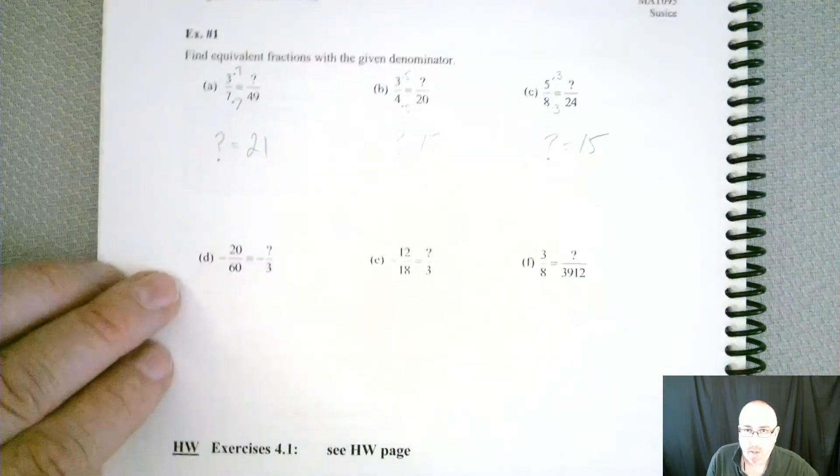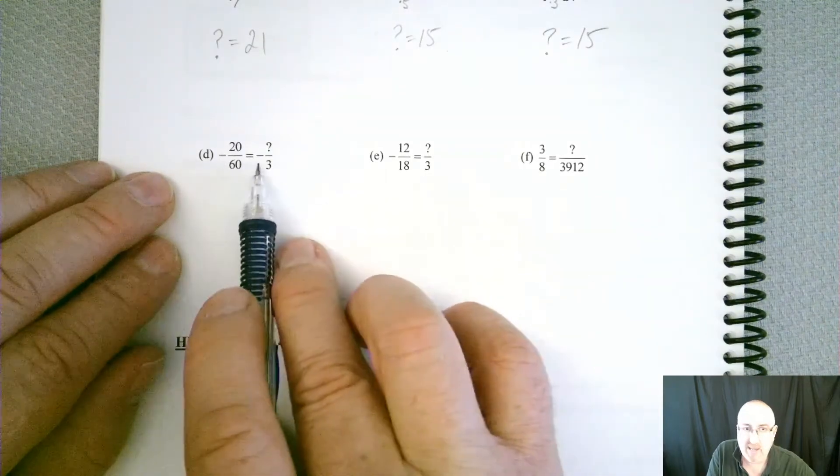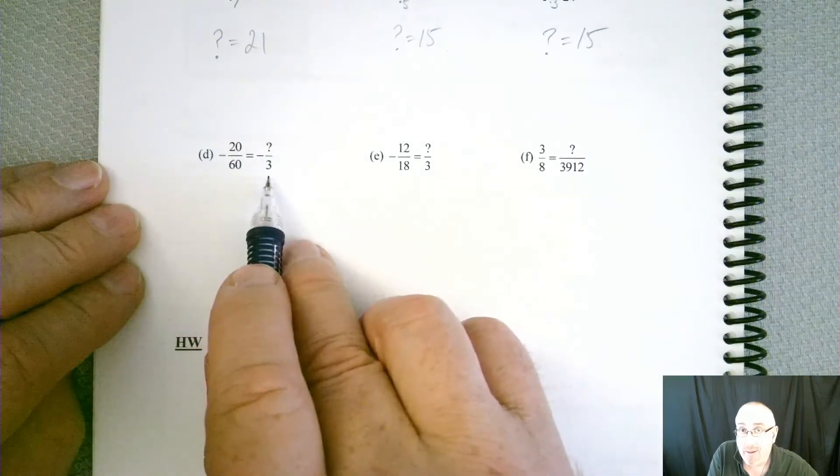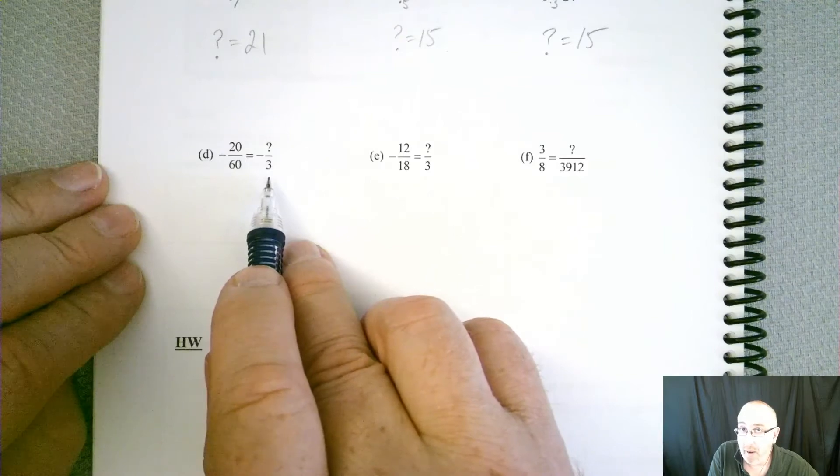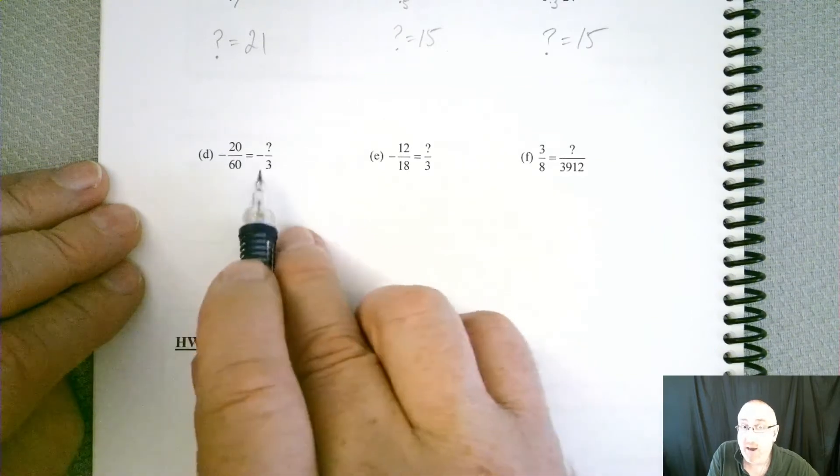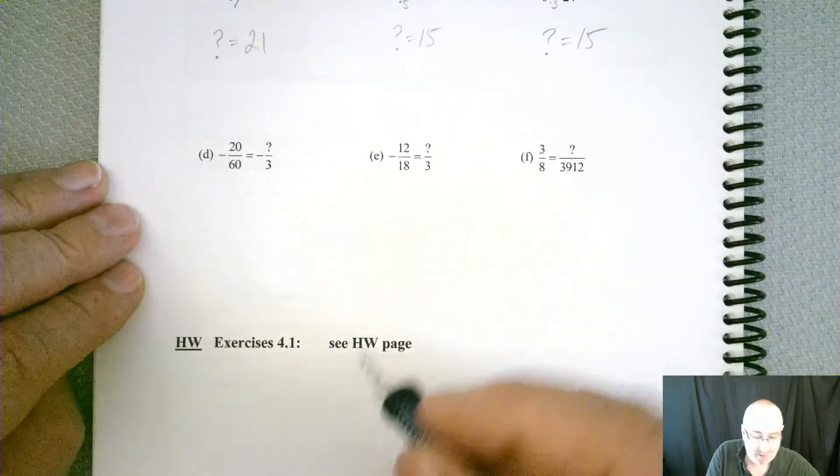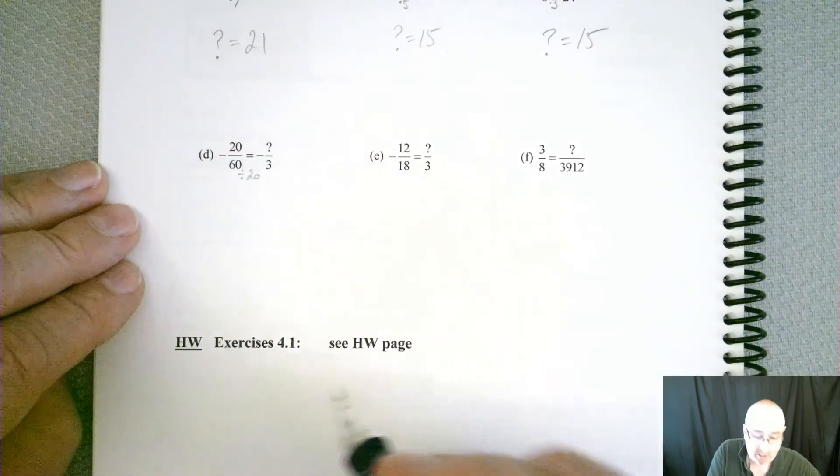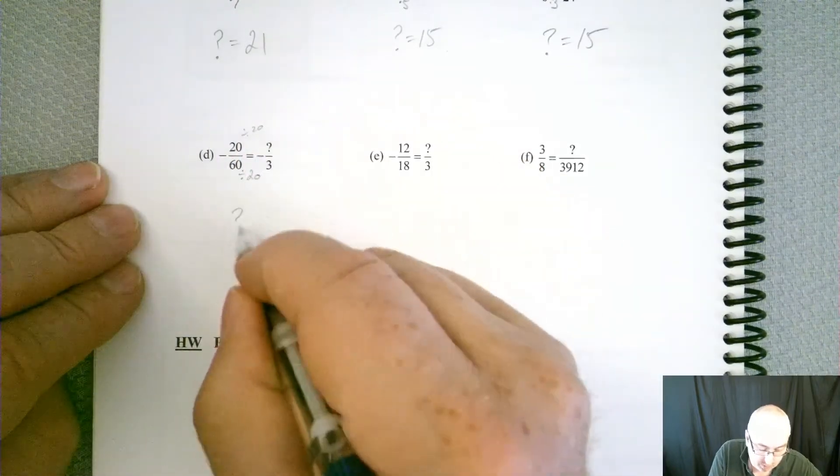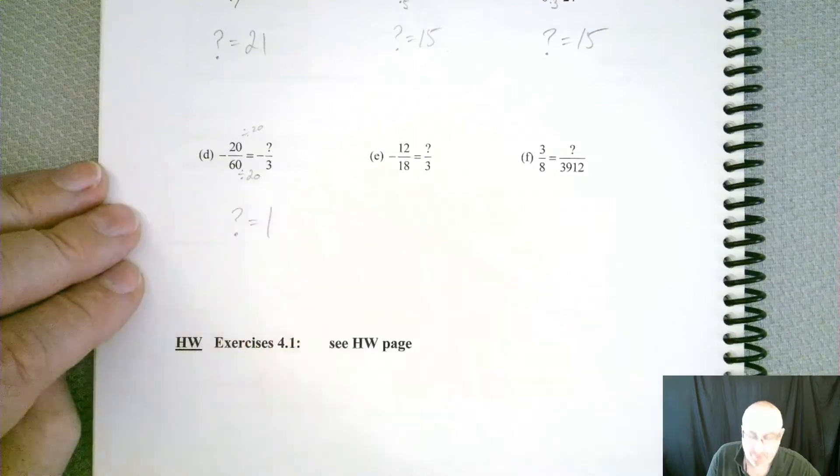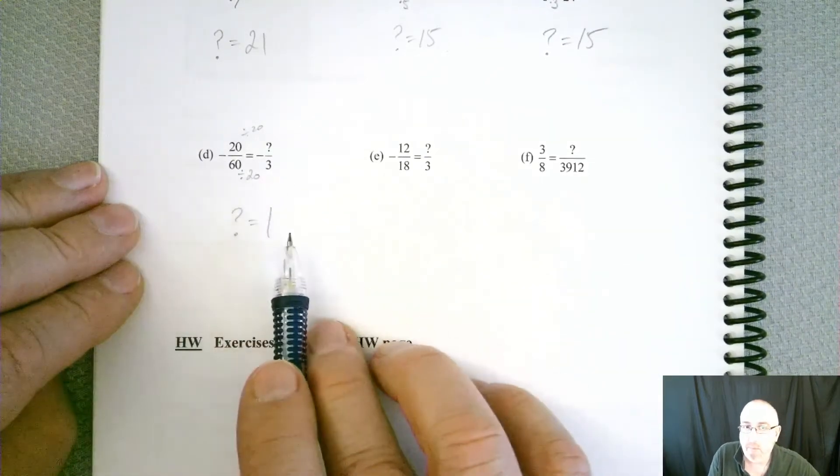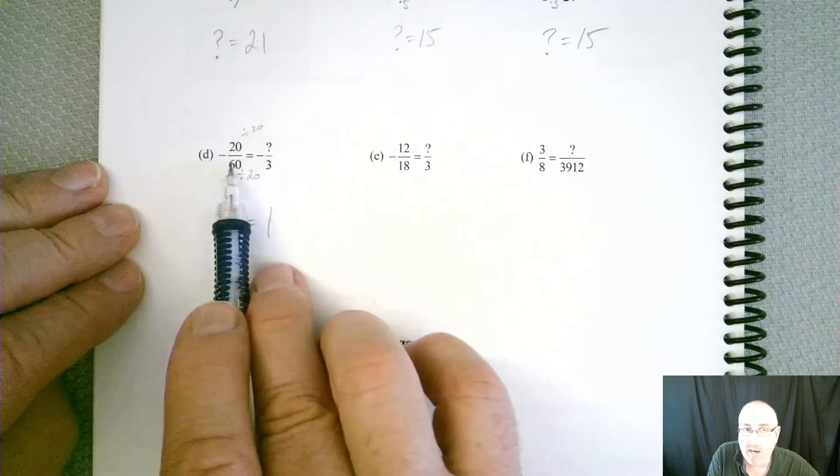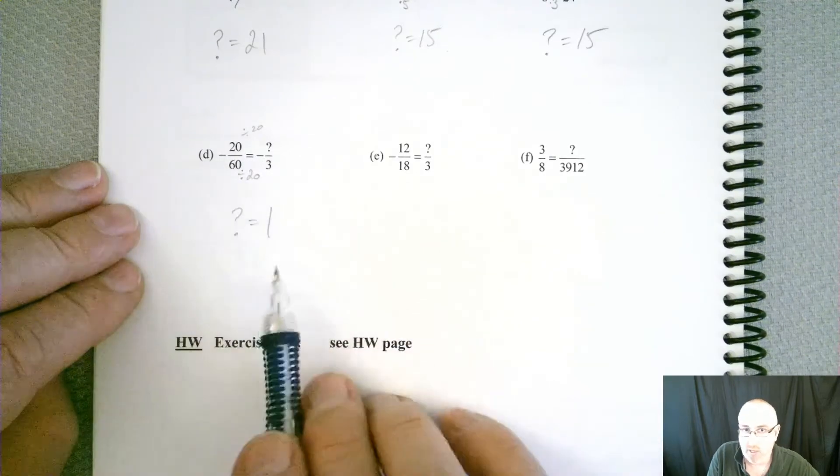What about this one? Now they're trying to get a little sneaky with these negatives in here, so we've got to be a little bit careful with those. But how did we go from 60 down to 3? What did they divide by? If you're not sure, divide these two and that will give you the result. If you divide 60 divided by 3, that means I had to divide by 20. So I've got to do the same thing to the top. So my question mark better be equal to 1. Now, what about those negatives? Well, not in this one, because you had a negative on this side, and you've got a negative on this side, so it's already taken care of itself. We didn't have to worry about it in our answer.